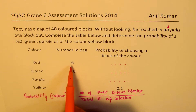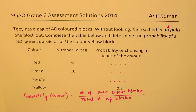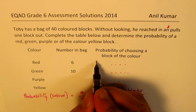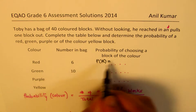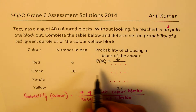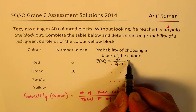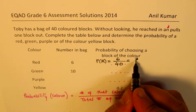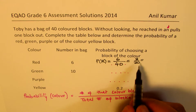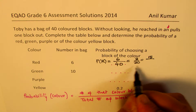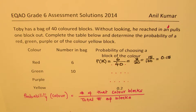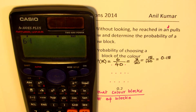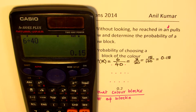We know there are 6 red blocks, so the probability of picking up a red block is 6 over 40, which can be written as 3 over 20. Multiplying by 5, we get 15 over 100, which gives us 0.15. You could also use a calculator: 6 divided by 40 gives your answer in decimals as 0.15.